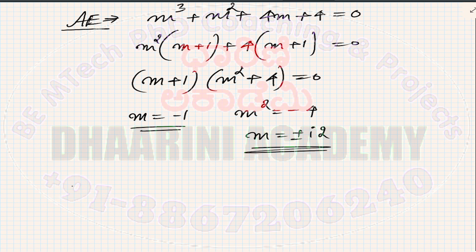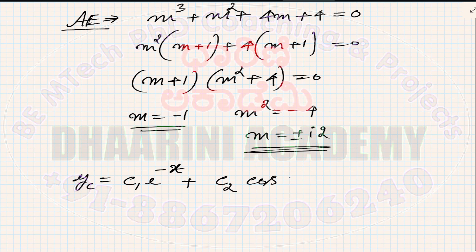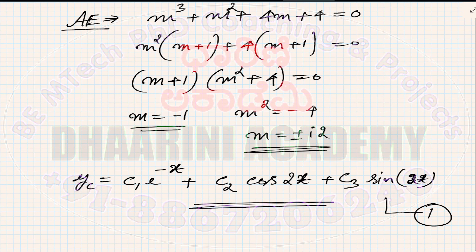Three roots: m = −1 is real and distinct, and m = ±2i are complex conjugates (no real part). Therefore yc = c₁e^(−x) + c₂cos(2x) + c₃sin(2x). This is equation 1.